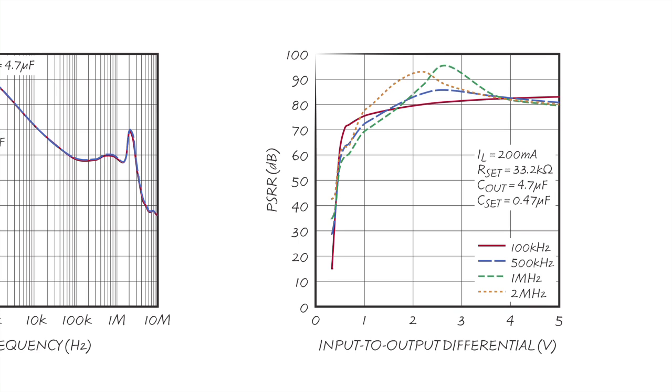It maintains 70 dB PSR up to 2 MHz with just 1 volt differential, and 60 dB PSR up to 2 MHz with a mere 600 millivolt differential.